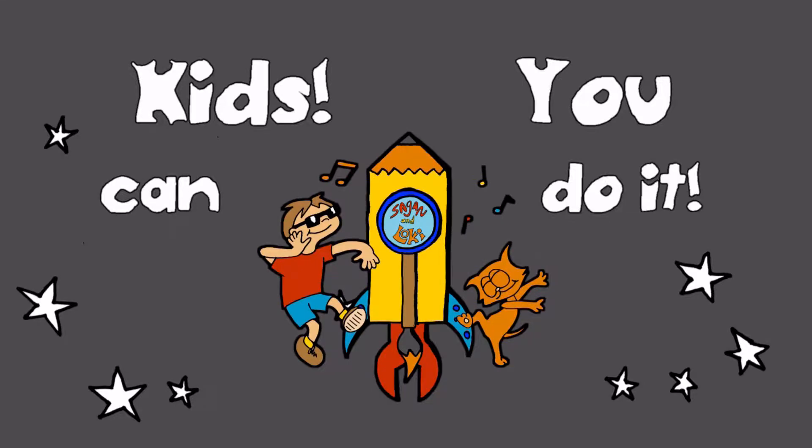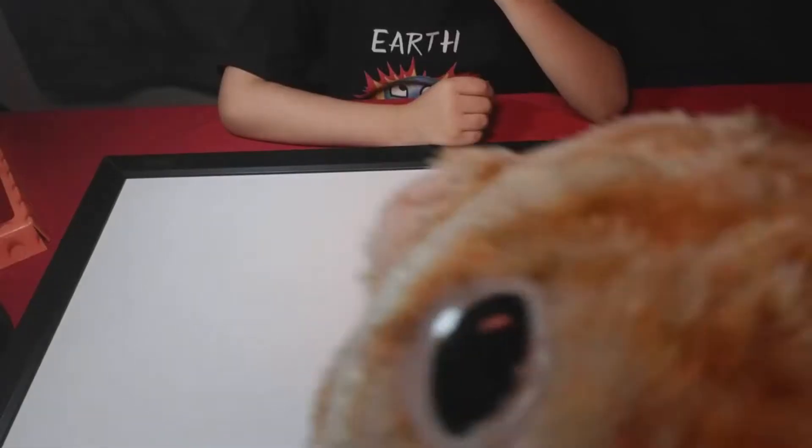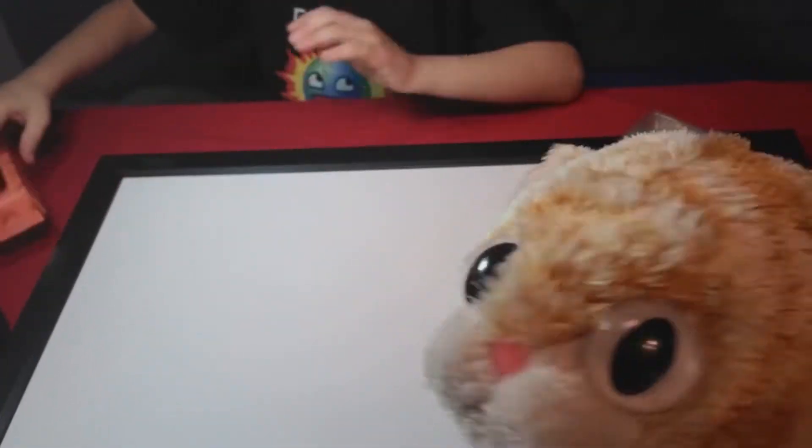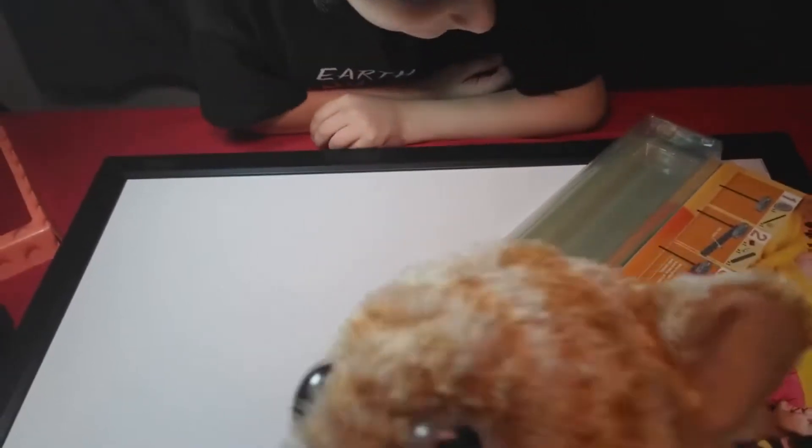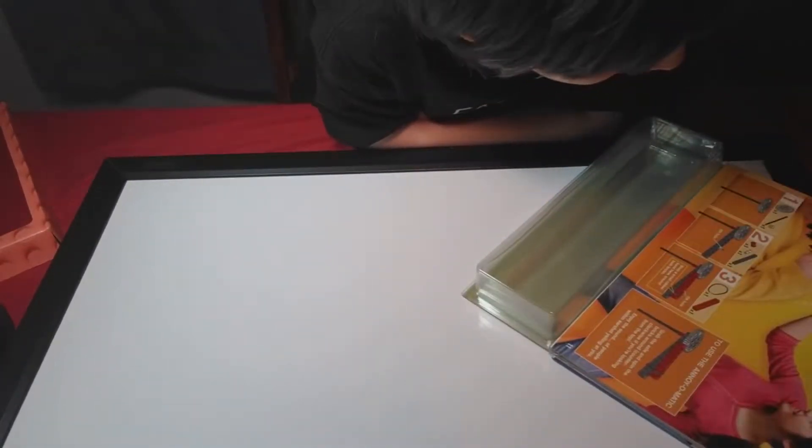Kids, you can do it! Hi there! We're doing Crazy Action Contraptions Lego number 2 from the Klutz book. And this is called the Annoy-O-Matic.